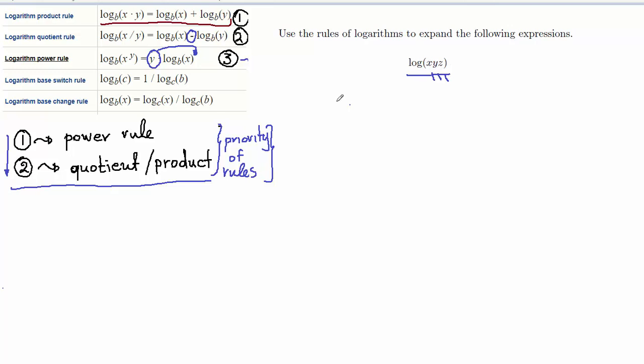What I can do is apply the first rule right here, the product rule, to split this logarithm. I can do it in two steps if you want, just to make sure that you are not confused. But since you have a product that is applied twice, x times y times z, you can do it in one step as well. So basically, what you have is log of x plus log of y plus log of z.